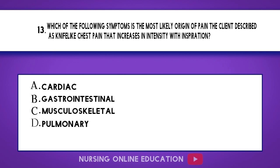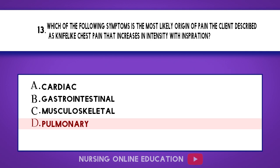Question 13. Which of the following symptoms is the most likely origin of pain the client described as knife-like chest pain that increases in intensity with inspiration? A. Cardiac. B. Gastrointestinal. C. Musculoskeletal. D. Pulmonary. The answer is option D: Pulmonary.